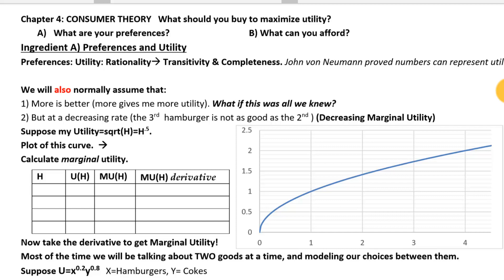As I mentioned in the previous video, when you're talking about maximizing utility there are two pieces that go into it. The first piece is: what are your preferences? If we're going to model someone maximizing utility we need to have a way to model people's preferences — how much do people like different combinations of goods. The second piece is the budget equation and budget lines: what are the combinations that you can actually afford? When we put those two ideas together we can figure out the thing you can afford that also maximizes your utility.